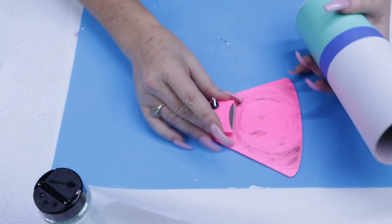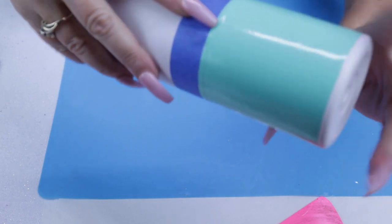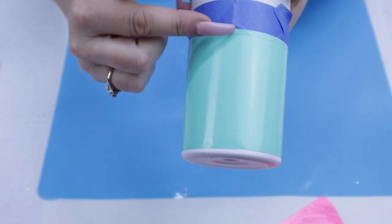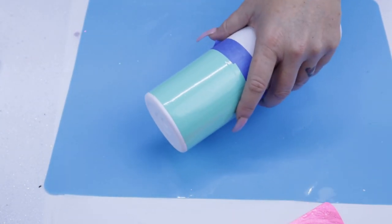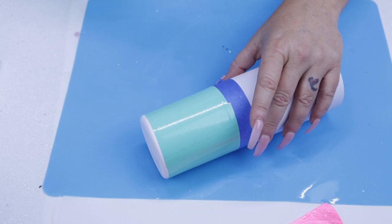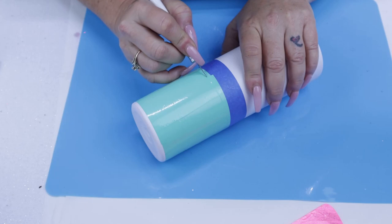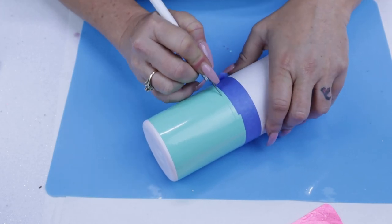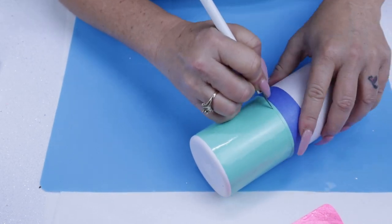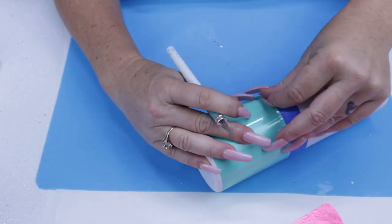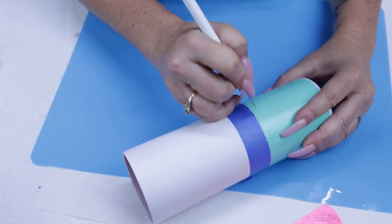Once you're satisfied with your bottom rim, now we're going to move to the top rim where we're going to use the painter's tape as our guide to trim the top. Once you're satisfied with that cut, then you can peel off the painter's tape.